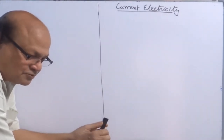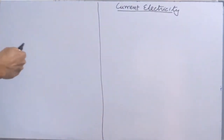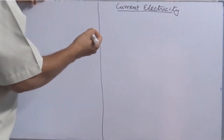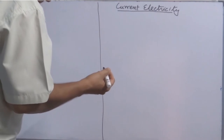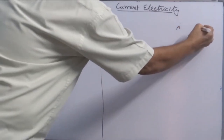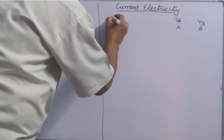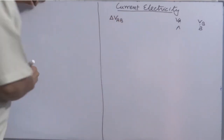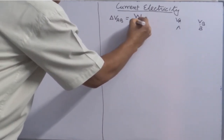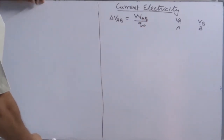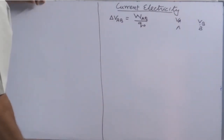Why does current flow through a conductor when it is connected across two points having potential difference? Before that, let's briefly cover what electric potential is. We know that electric potential at a point is the measure of electric potential energy of that point. If we have two points A and B, A has potential VA and B has potential VB. The potential difference between A and B is defined as the work done in moving a unit test charge from A to B in an electrostatic field.